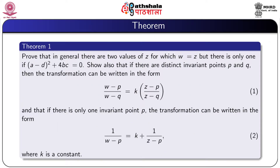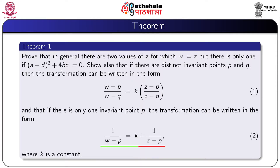A result proves that in general there are two values of Z for which W is equal to Z, but there is only one if A minus D squared plus 4BC equal to 0. Also, if there are distinct invariant points P and Q, then the transformation can be written in the form W minus P by W minus Q equal to K times Z minus P by Z minus Q. And if there is only one invariant point P, the transformation can be written in the form 1 by W minus P equal to K plus 1 by Z minus P, where K is a constant.